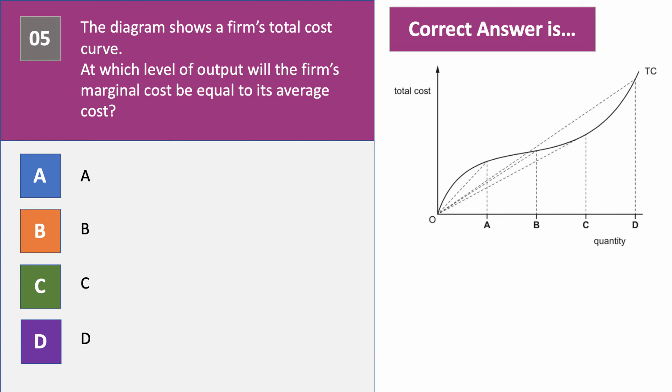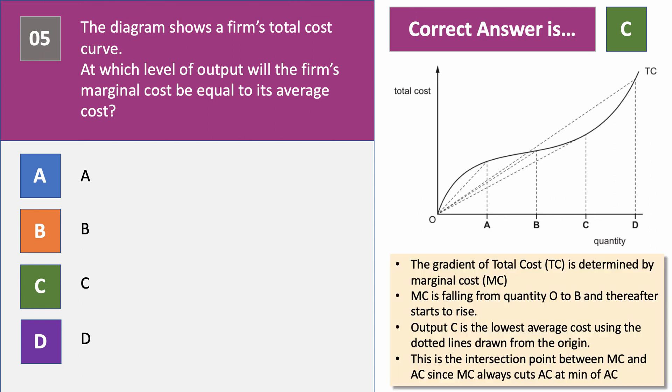The answer to question five is C — that's the output where the firm's marginal cost is equal to average cost. The gradient of the total cost curve is determined by marginal cost. From output 0 to output B, marginal cost is actually falling because the gradient of the line is getting shallower. After output B, the gradient starts to rise and marginal cost starts to increase. Output C has the lowest average cost — we use the dotted lines from the origin, and the shallowest gradient of that dotted line when it's just tangential to the total cost curve occurs at output C. That gradient represents average cost, so we know that's the minimum of average cost.